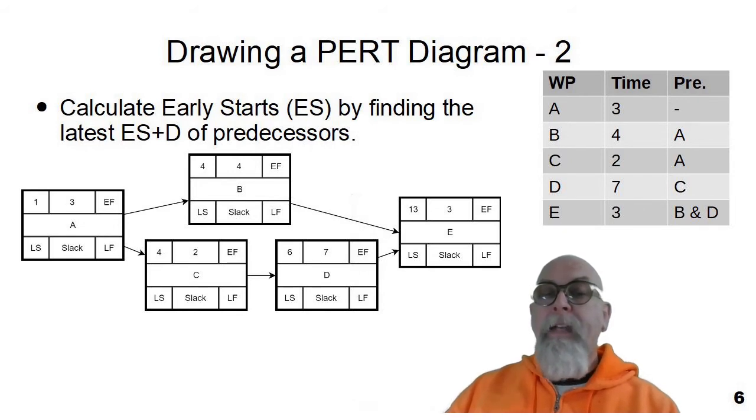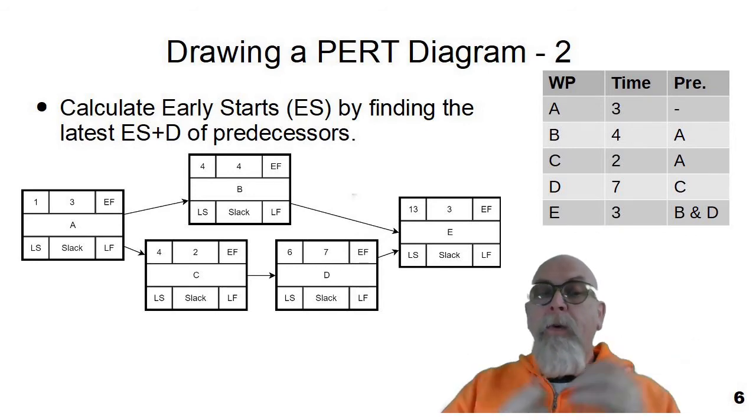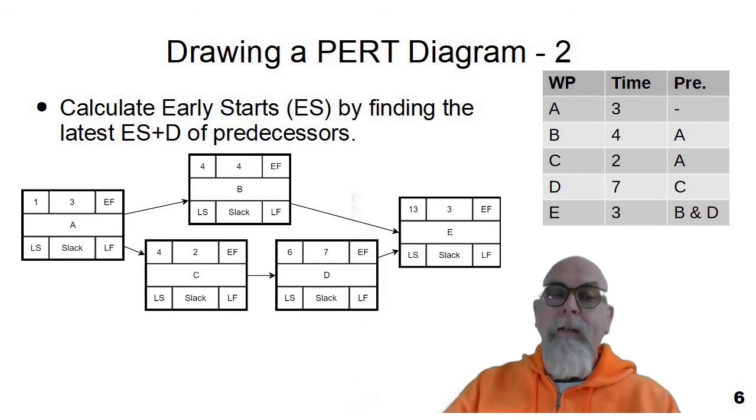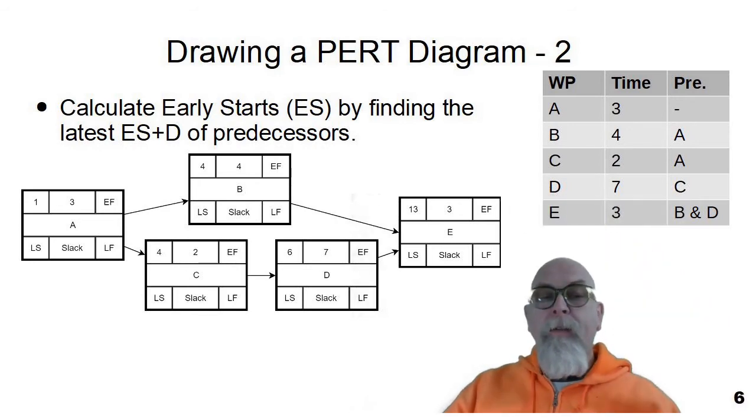Task D could start on day six. Task D will work on it for day six, seven, eight, nine, ten, eleven, twelve, seven days, which means that the earliest, the latest early start that we can do E is thirteen. Even though if you add four plus four from B, it's eight. But as I said, we use the latest early start plus duration of the predecessor tasks. So that's why for E, we have an early start of thirteen.